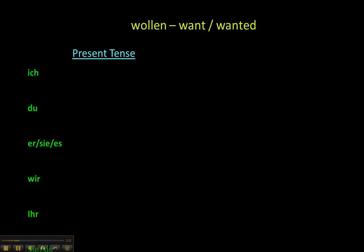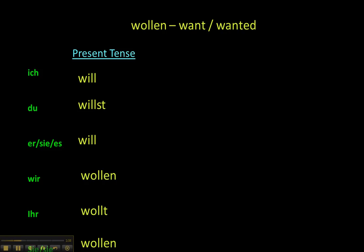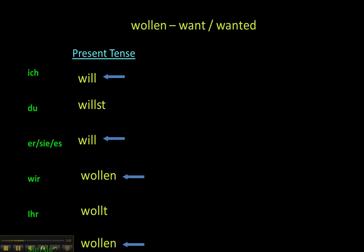Wollen, to want: ich will, du willst, er will, wir wollen, ihr wollt, sie wollen. This one can be especially tricky for English learners because we associate will with meaning will, but it actually means want.